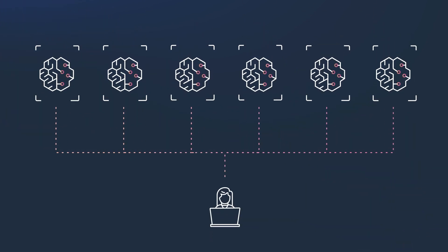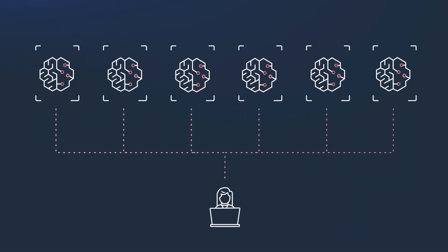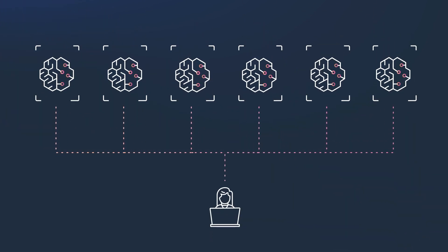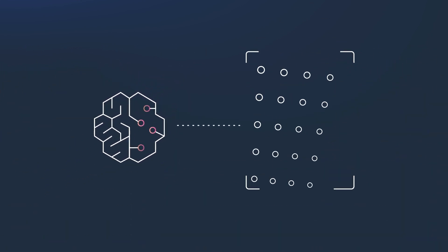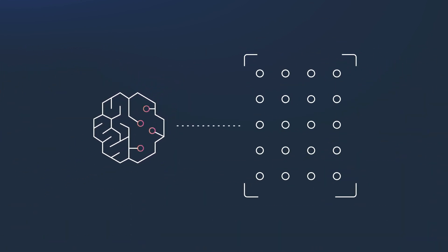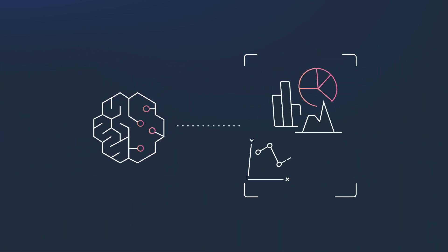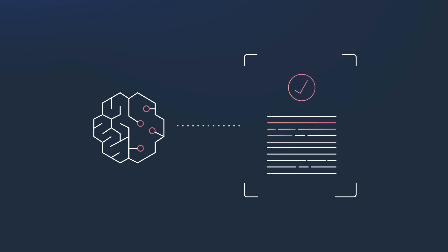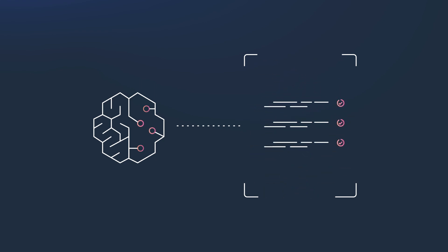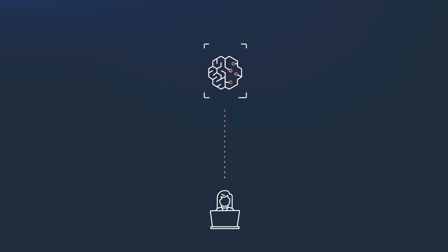There may be hundreds or even thousands of models across your organization, which makes them a challenge to manage. SageMaker Model Registry catalogs ML artifacts so that they can be centrally tracked and accessed, increasing reproducibility and governance.